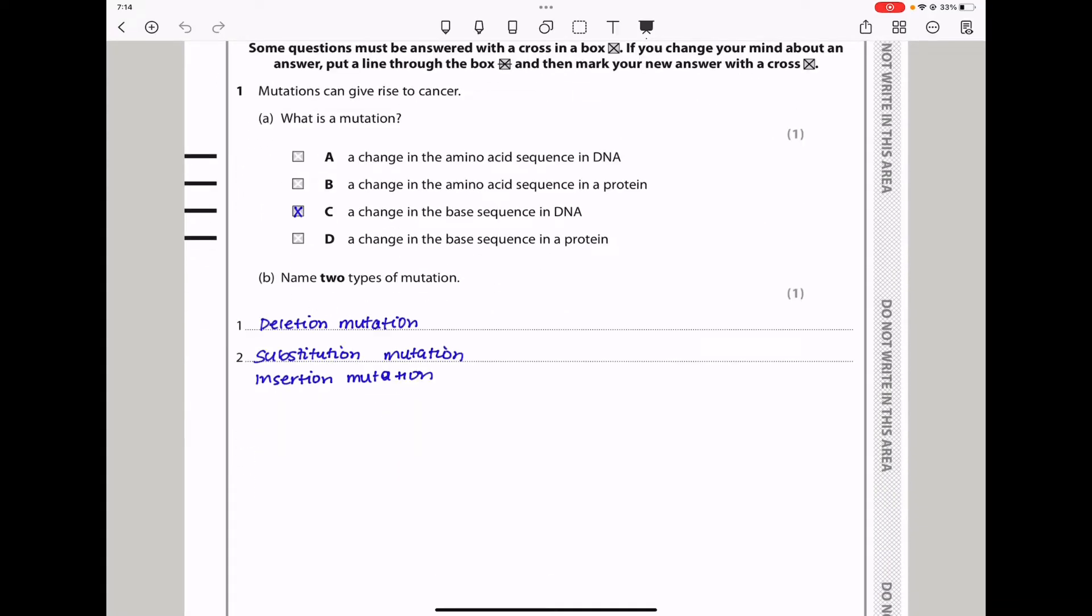Part B says name two types of mutations. Here I wrote a deletion mutation, substitution mutation, as well as insertion mutation. So if you had written two of these, you'll get the one mark that was awarded for this part.